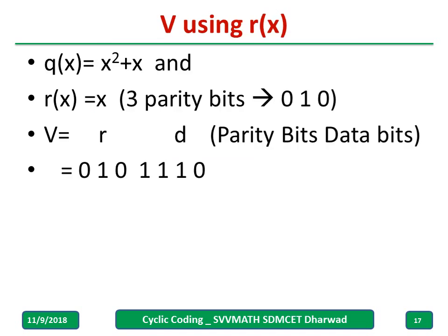And using these two how to write a codeword or parity bits? One is using r(x). You have q(x) given, r(x) is X. I know 7,4 means 7 minus 4, 3 parity bits I need. Therefore 1 + X + X² + X³ in that format I need. 1 is missing so 0, X is there so 1, X² is not there so 0. Hence, total codeword how I can write: 010 parity bits followed by data bits 1110.